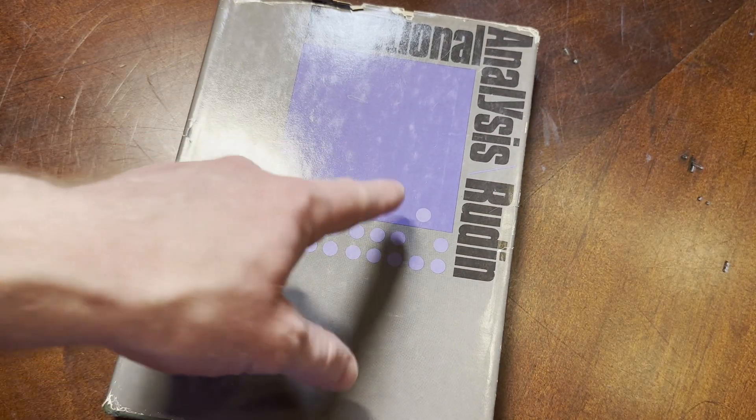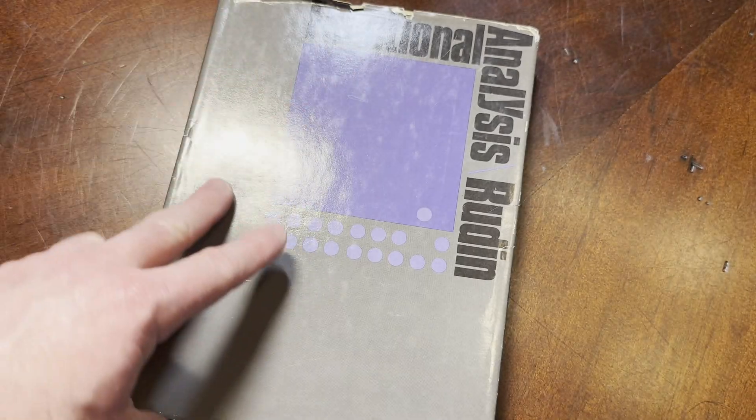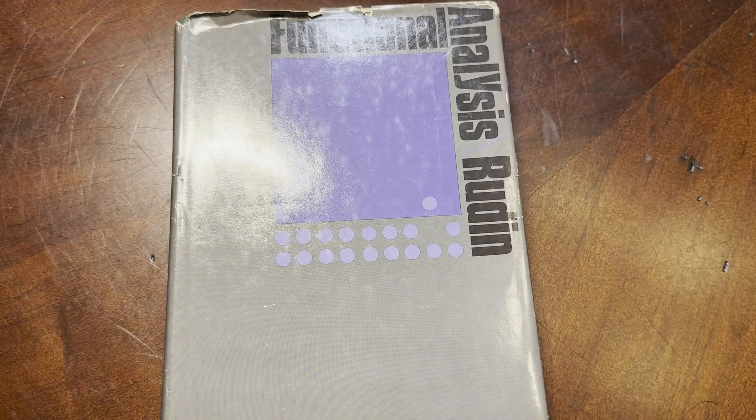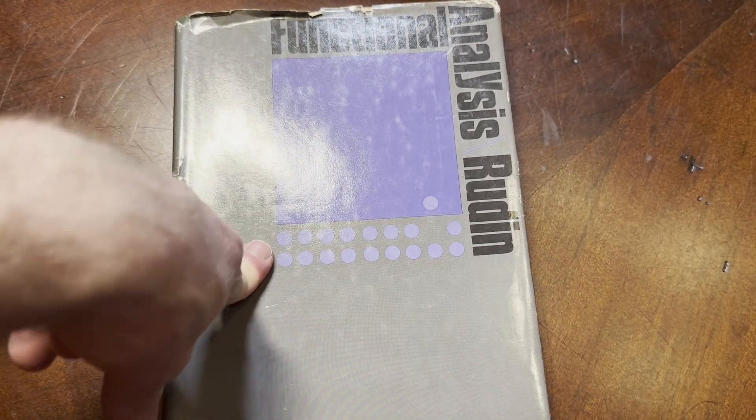This is the same Rudin who wrote those other books: the Principles of Mathematical Analysis book and also Real and Complex Analysis.